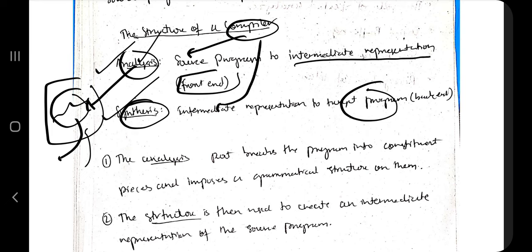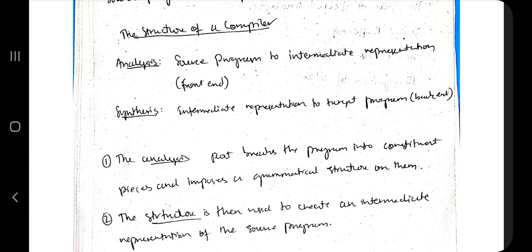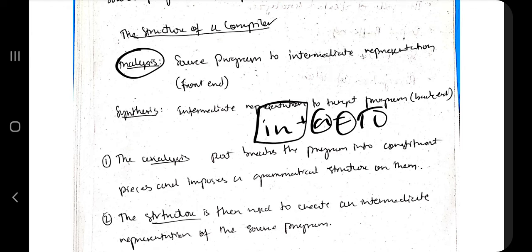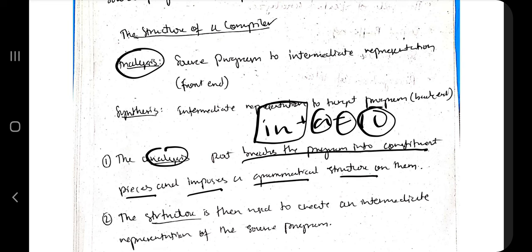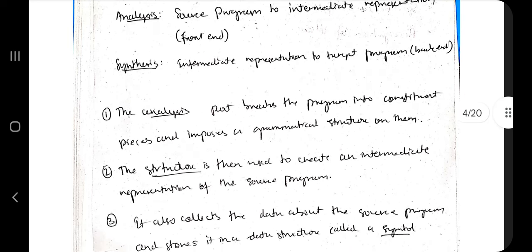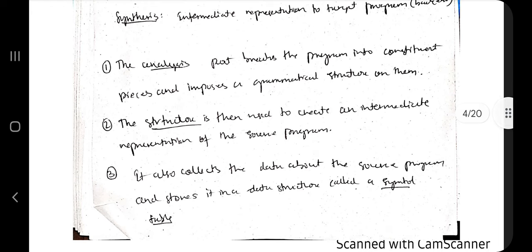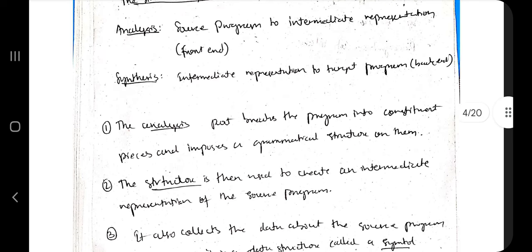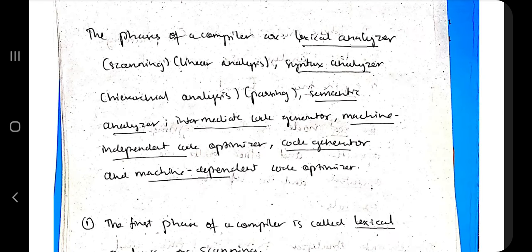For example, if I write 'int = 10', the analysis part understands that 'int' is a keyword, '=' is an operator, and '10' is a constant — it breaks the program into constituent pieces called tokens and imposes a grammatical structure on them. The synthesis part then uses those tokens to create the target program. These are the two functions of analysis and synthesis.